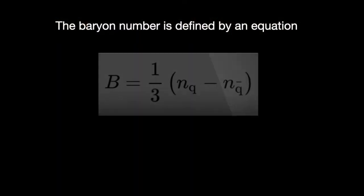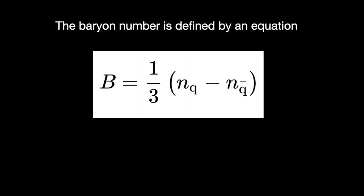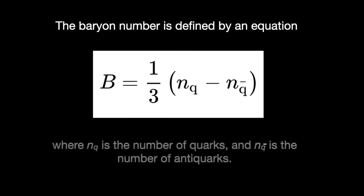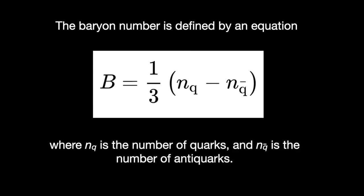The definition of the baryon number is an equation which looks a lot more complicated than it actually is. Here it is. And in this equation NQ is the number of quarks and it makes no difference what kind of quark that is. NQ with a little bar above it is the number of anti-quarks. And again it makes no difference what kind of anti-quark.